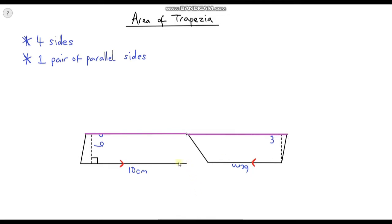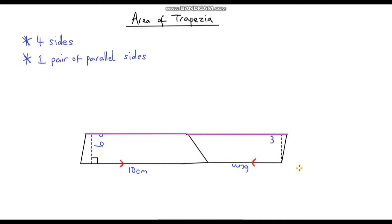Now I just need to draw a line to finish this off, and what I've created is a parallelogram. So I've effectively turned my original trapezium into a parallelogram. The really important part here is that the area has not changed, because all I did was move part of it, rotate it, and put it on the end. So the area is still exactly the same. If we can calculate the area of the parallelogram, that's going to be exactly the same as the area of our original trapezium.